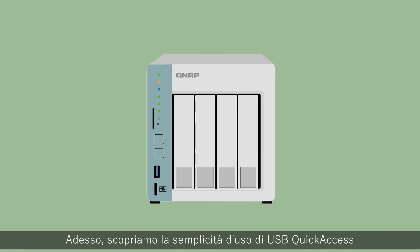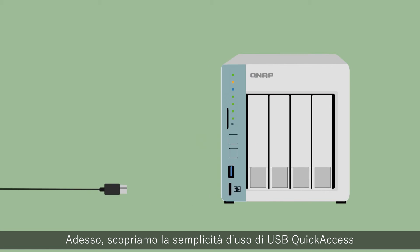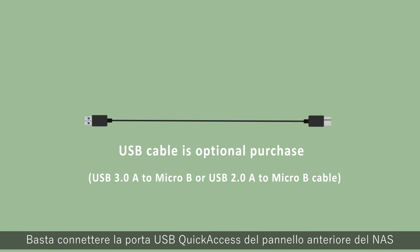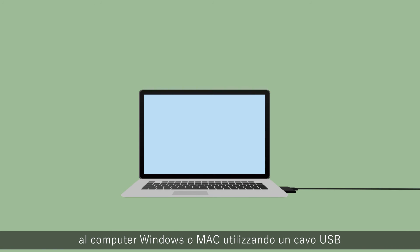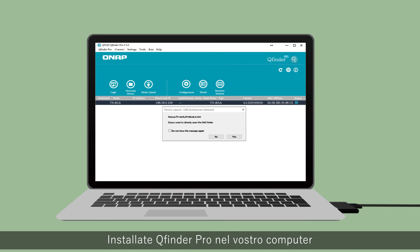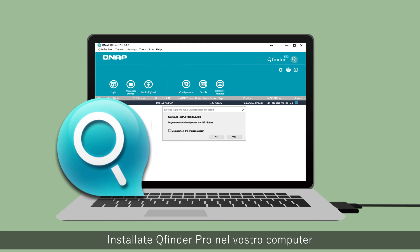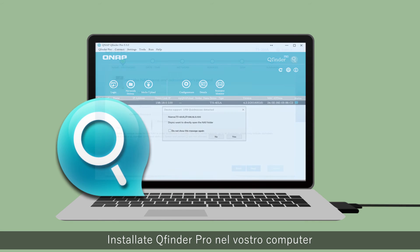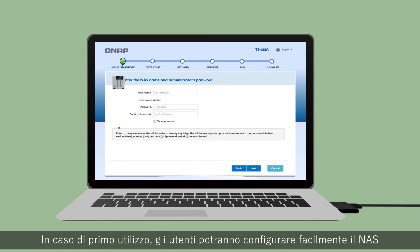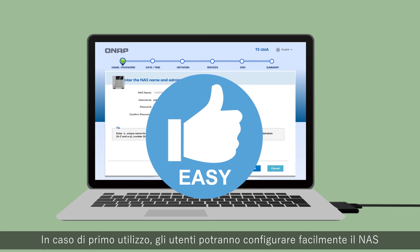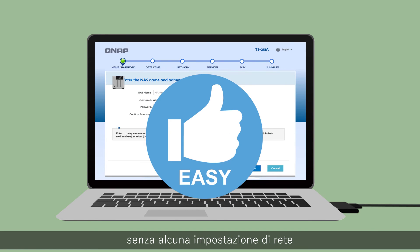Now let's see how easy it is to use USB quick access. Simply connect the front panel USB quick access port on your NAS to your Mac or Windows computer using a USB cable. Install QFinder Pro on your computer and use it to find your NAS. First-time users can then easily set up their NAS without messing around with network settings.